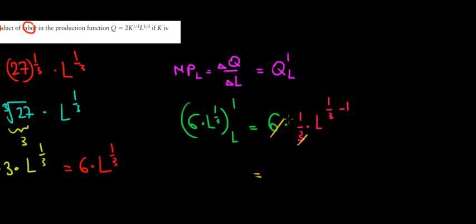So that's 2 times l to the power of 1 over 3 minus 1. That's equal to minus 2 over 3. And that's it.